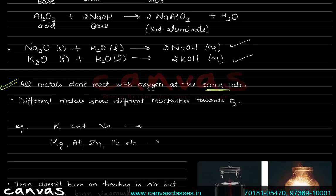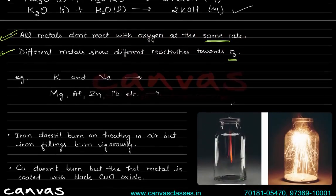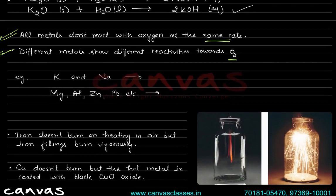All metals do not react with oxygen at the same rate. Some metals react very fast with oxygen and some react very slowly. Different metals show different reactivities towards oxygen. For example, potassium and sodium have a very vigorous reaction with air.